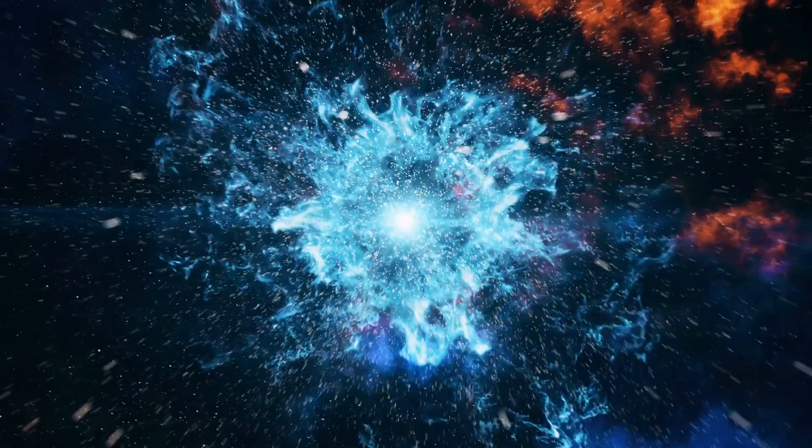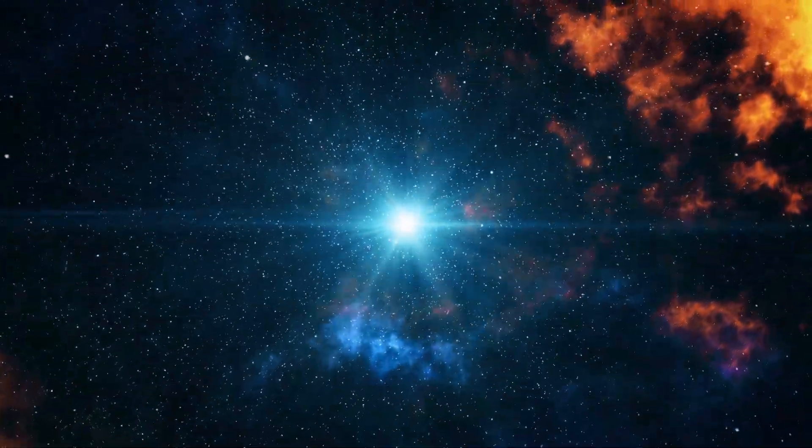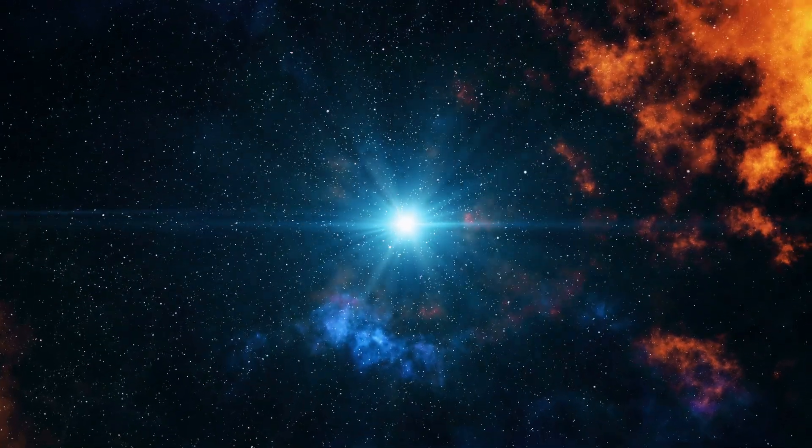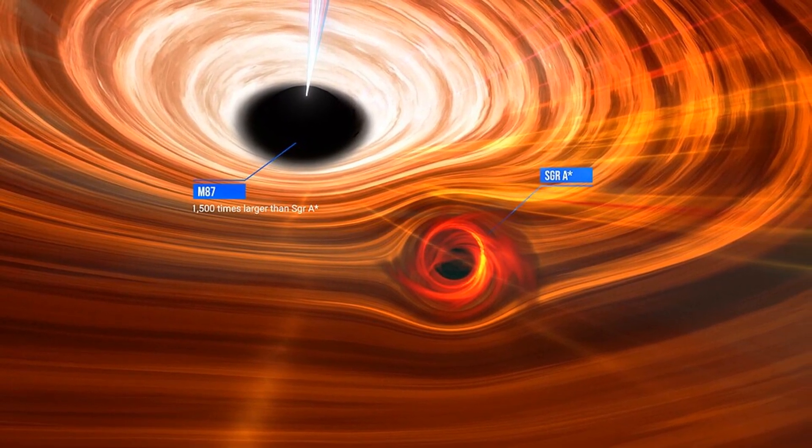But here's the puzzling part. Astronomers have found evidence of supermassive black holes that formed incredibly early in the universe's history, just a few hundred million years after the Big Bang. So how did they form so quickly and how do these supermassive black holes get so big?